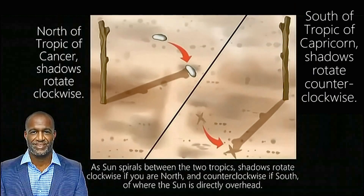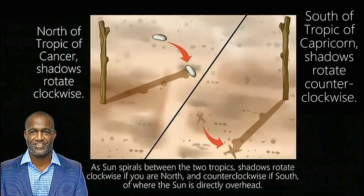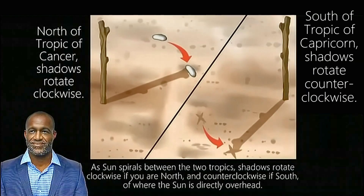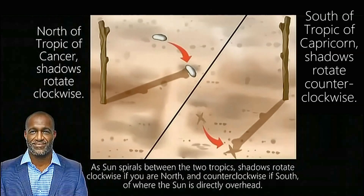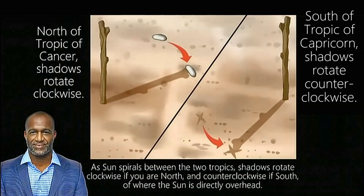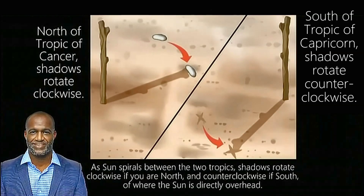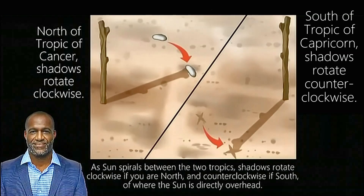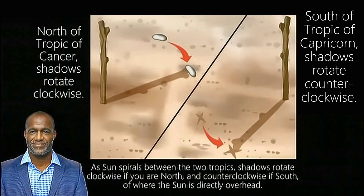You've just seen how shadow rotation defines the boundaries of the sun's movement. The sun spirals between the two tropics. In fact, this is the reason for the 23.5 degree tilt of the Earth. The tropics are at 23.5 degrees.